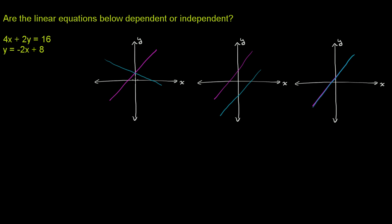We call these two separate equations as being independent — they're not dependent on each other. These two that are the same thing are dependent. If you have two different lines, you're talking about independent equations.